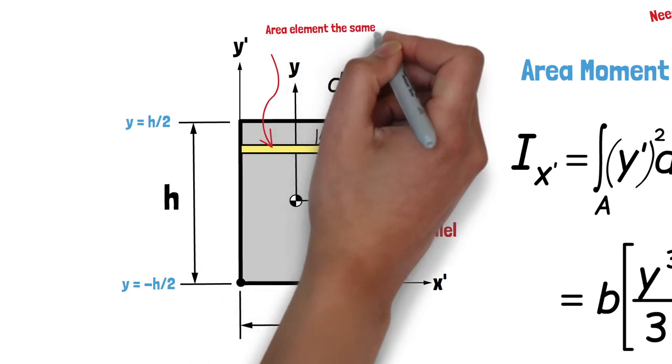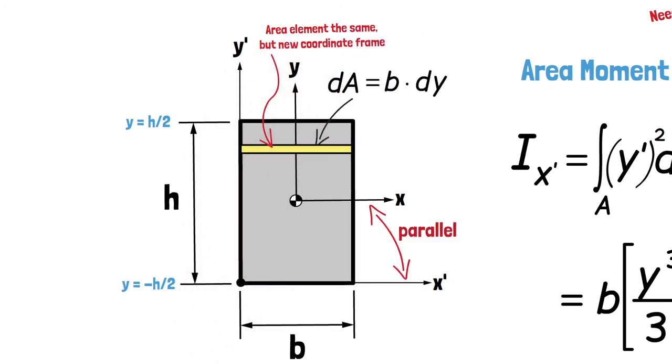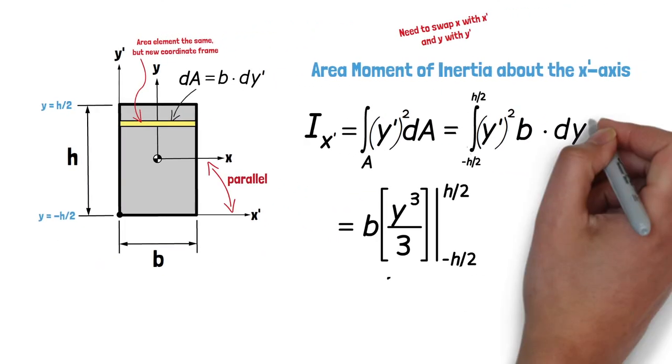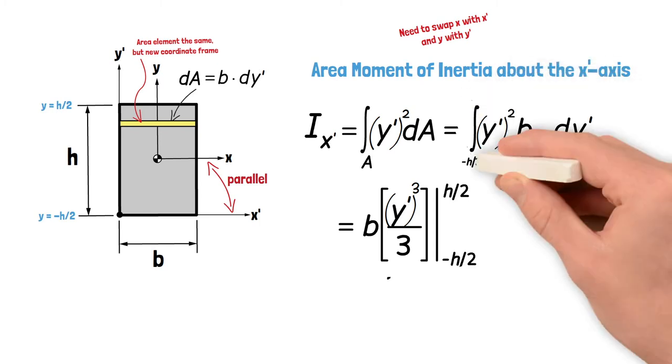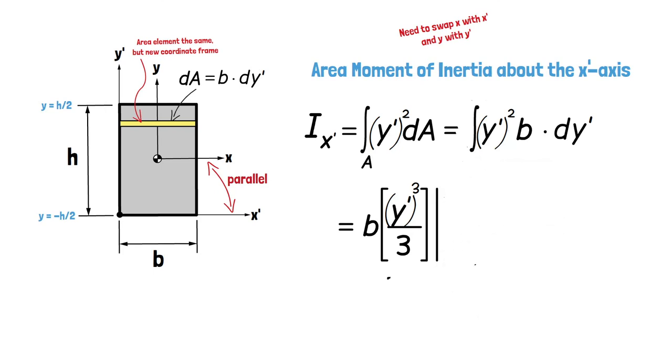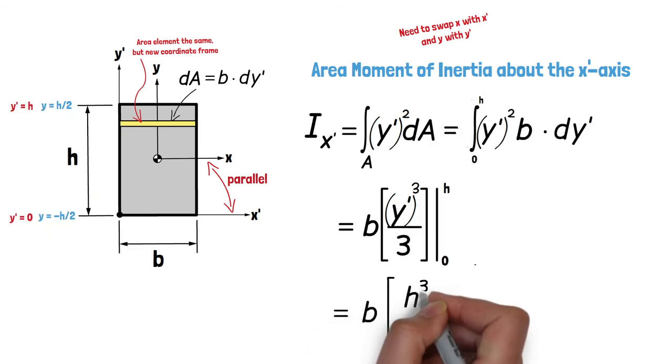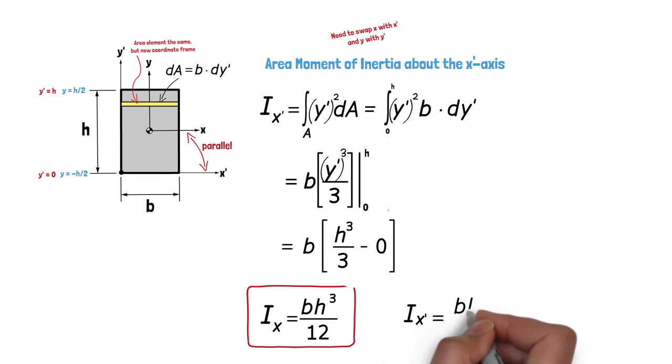We can use the same differential area element as before, only in the new coordinate frame dA is now equal to b times dy'. To evaluate this integral over the entire domain of the area, we can observe that the limits of our integral change with the new coordinate frame. Rather than varying between y equals negative h over 2 and positive h over 2, y' will vary between 0 and h. So despite the result of the integration being the same, the overall result is dramatically different due to the different limits. Ix' is equal to b times h cubed over 3, which is 4 times larger than Ix.